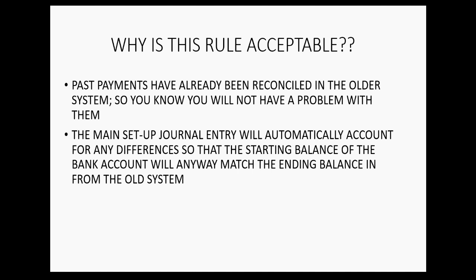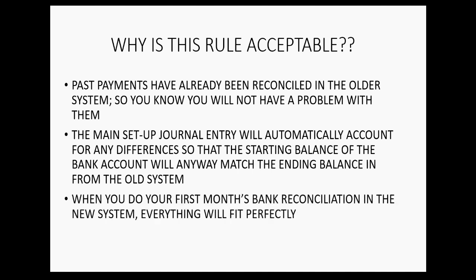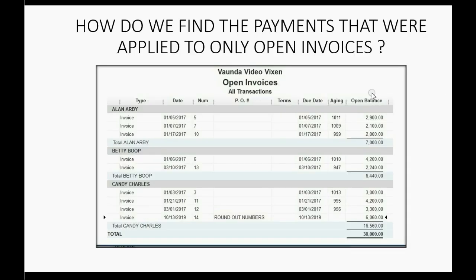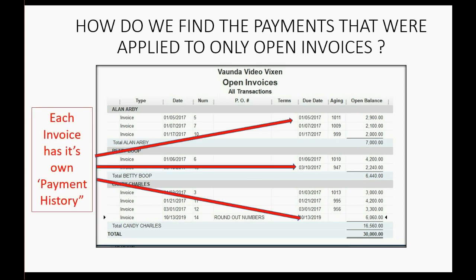If you do it this way, your bank reconciliation will work on the very first month of the new system. To find the payments applied only to the open invoices, each invoice has its own payment history. Just open the invoice to see the full amount so you can re-enter it, then look at the invoice payment history to see the specific payments and the specific amounts applied to those open invoices.